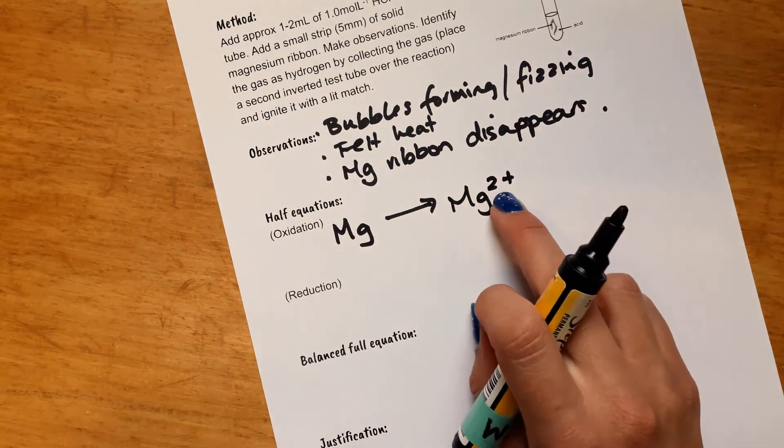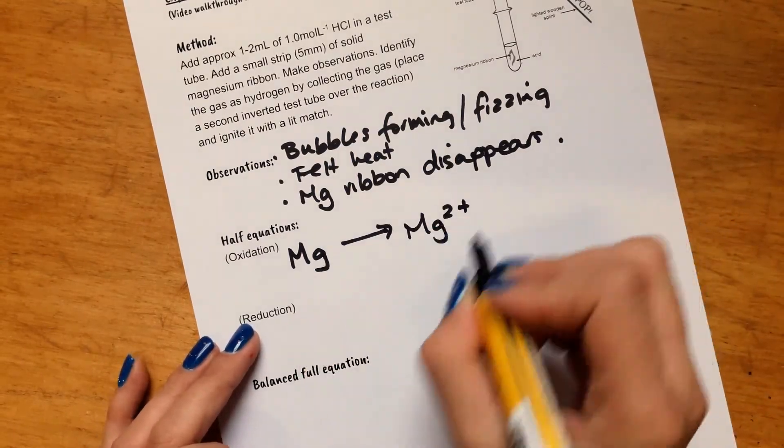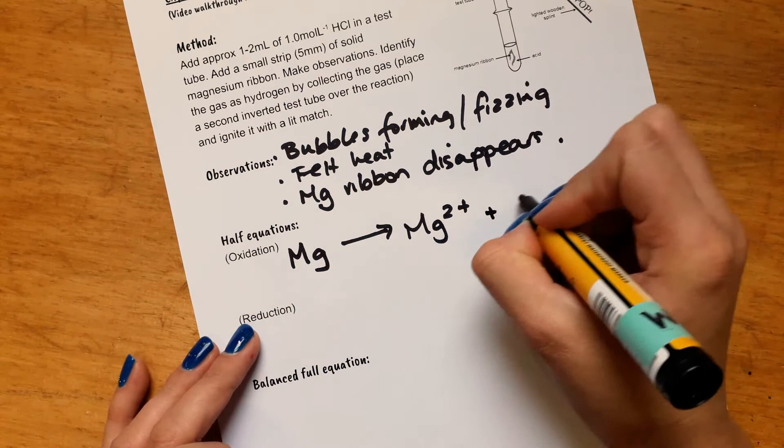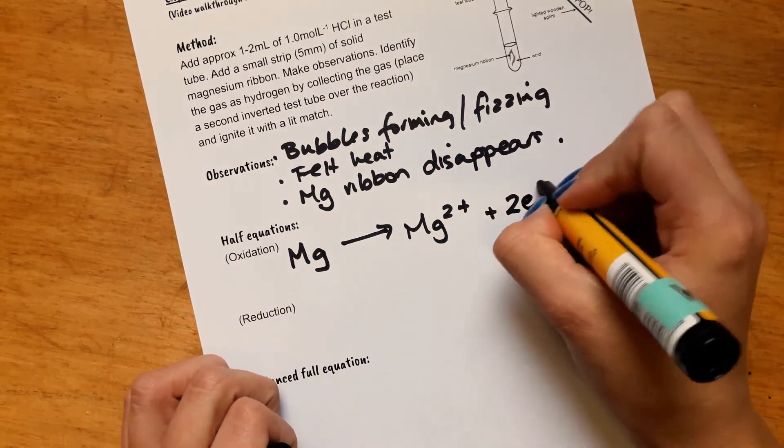Mg²⁺ is an ion with a positive charge which means it's lost two negative electrons. So to make sure this is balanced, we will just show that those two electrons have been lost by the original magnesium. Like that.